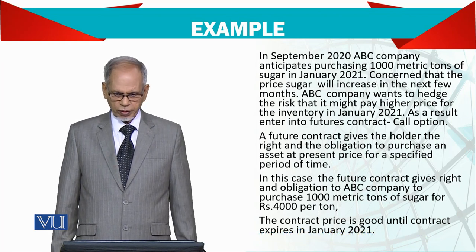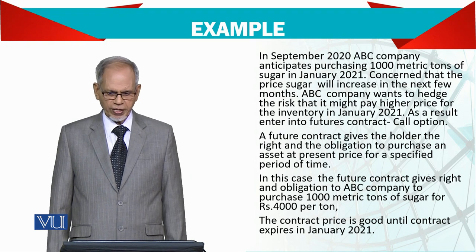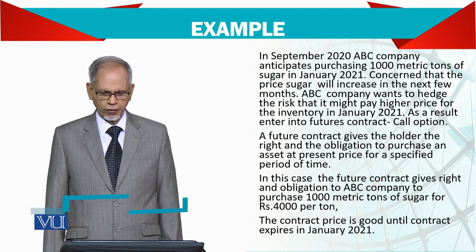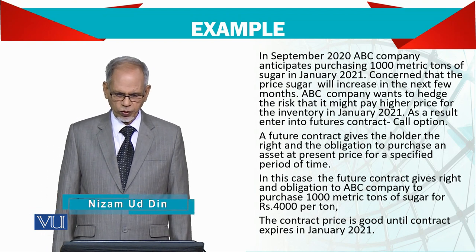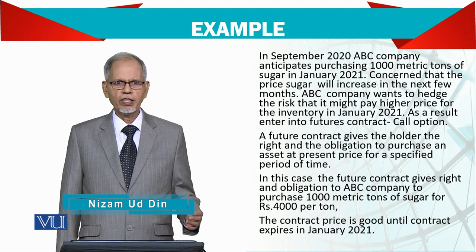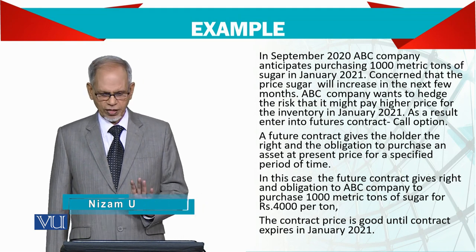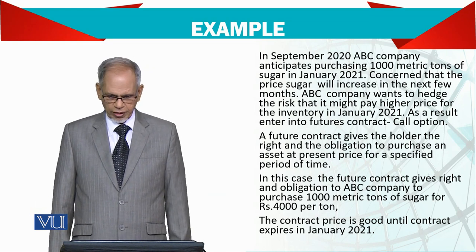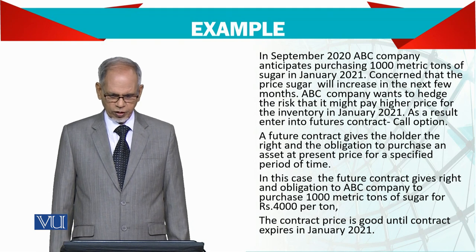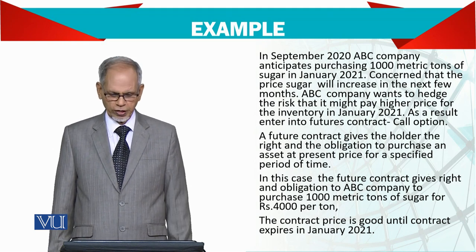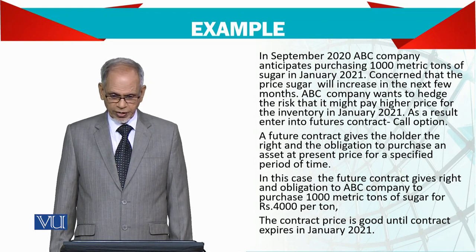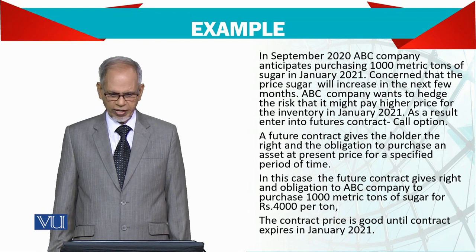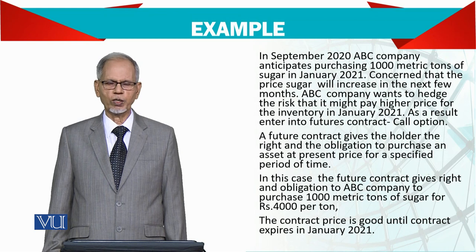In September 2020, ABC company anticipates purchasing 1,000 metric tons of sugar in January 2021. There is concern that the price of sugar will increase in the next few months. ABC company wants to hedge the risk that it might pay a higher price for the inventory in January 2021.